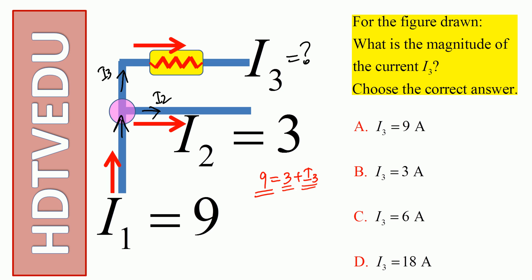Current entering is 9, current leaving is 3 plus I3. Subtract 3 from both sides and we get I3 equals 6 amperes. So we see that current I3 is 6 amperes. The correct answer is 6 amperes.